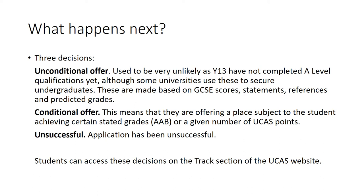So the decisions you get back from universities — what will they look like? The first is an unconditional offer, which means the student has a place at that university regardless of what grades they achieve in their A levels. These used to be really rare. These days universities will look at a student's GCSE scores, personal statement, references and predicted grades, and if they feel that student is a safe bet they might make an unconditional offer to try and tempt the student to accept.